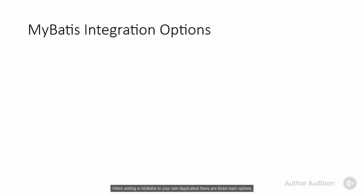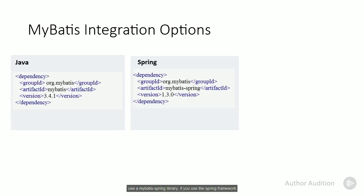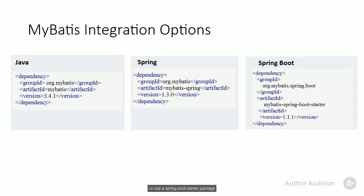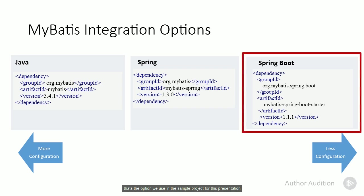When adding the MyBatis library to your own application, there are three main options: use the library directly, use a MyBatis Spring library if you work with Spring, or use a Spring Boot starter package. The Spring Boot option requires the least amount of configuration to get started — that's the option we use in the sample project for this presentation. More help on building with MyBatis can be found on the mybatis.org site, along with the latest version numbers.